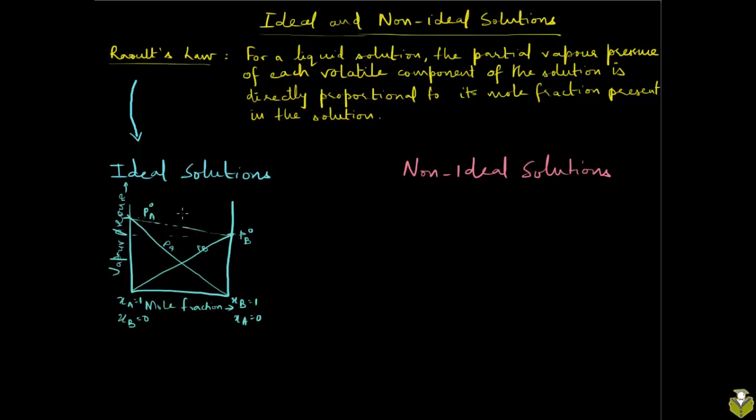The line joining PA naught and PB naught is the line that denotes P total, the total pressure above the solution surface coming from the partial vapor pressures of the volatile components. We already know this from our earlier videos.